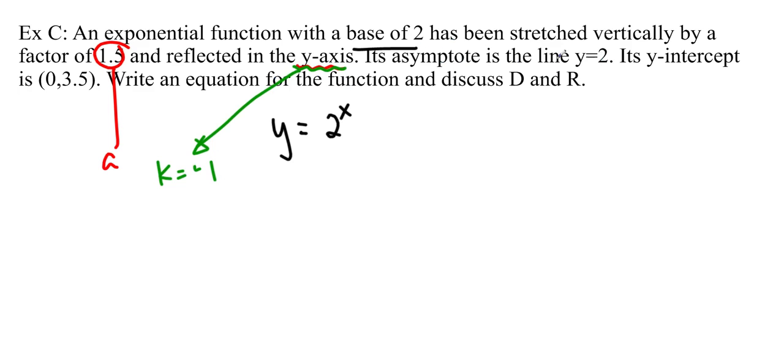And its asymptote is the line y equals 2. Remember that the asymptote is really the up and down shift, so that means that c is equal to 2. And so we're going to try plugging this in without a d and see if that really gives us this y-intercept. If it didn't, then we would have to solve for d.